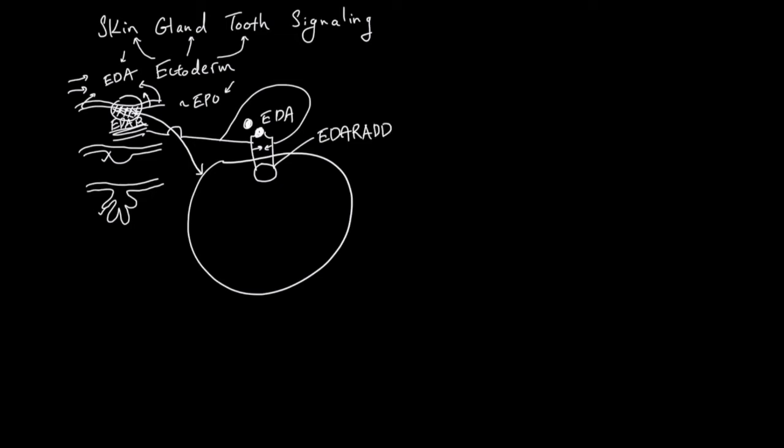EDARADD is going to help send the signal inside of the cell. This signal leads to activation of another protein called IKK. And IKK's job is to release NF-kappa-B, which is another protein that is being bound and stuck to a protein called IKB. This is the IKK that gets activated to release NF-kappa-B from this IKB. Why does NF-kappa-B have to be bound? It's because NF-kappa-B is a transcription factor.